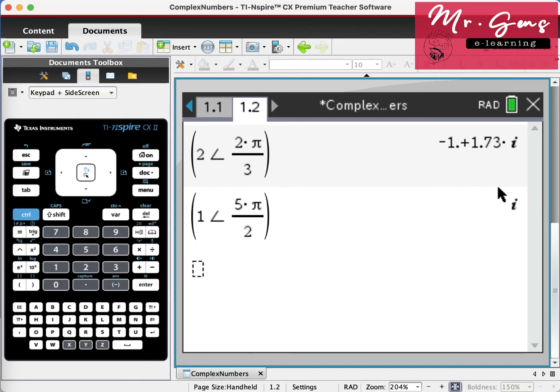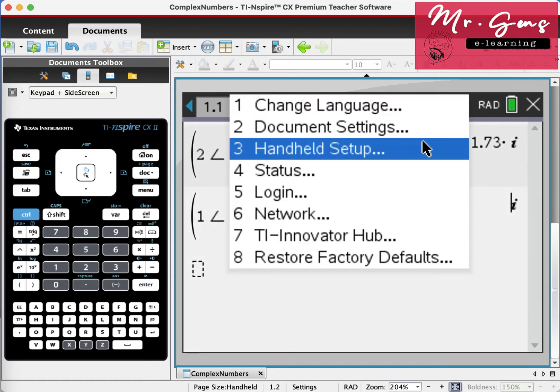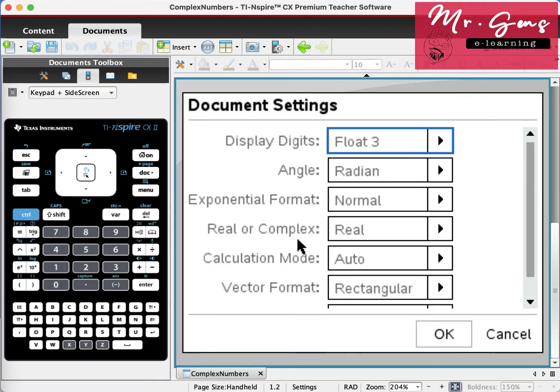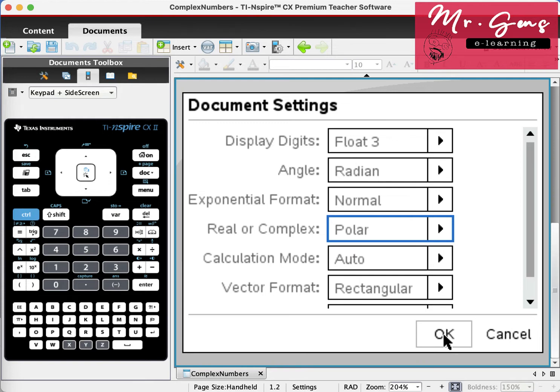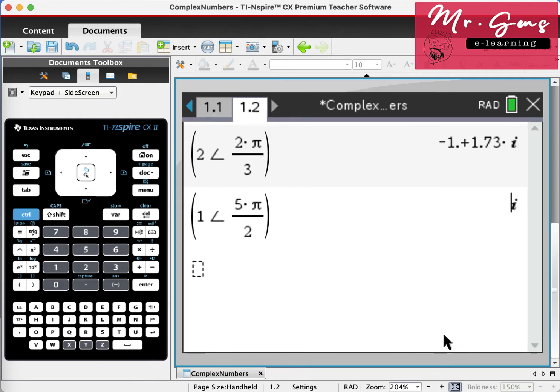Now let's go back to document settings one more time. We left it as real before. Now I want to change it to polar. Just press enter. Let's use the first number. When I press enter, my final answer will be in the Euler form. Pay attention to the units. Settings was radian, our answer is also radian.